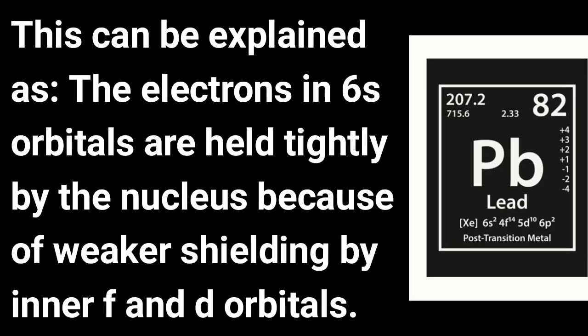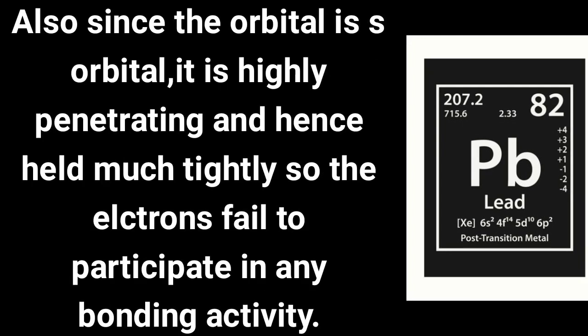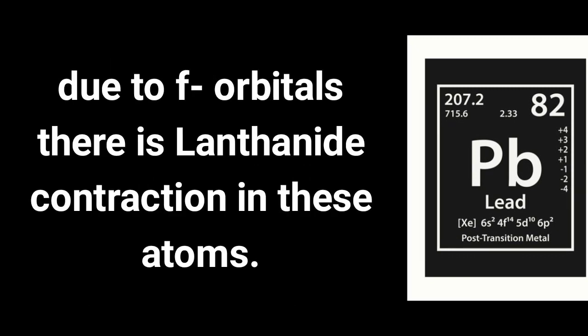This can be explained as follows: the electrons in 6s orbitals are held tightly by the nucleus because of weaker shielding by inner f and d orbitals. Also, since the orbital is an s orbital, it is highly penetrating and hence held much more tightly, so the electrons fail to participate in any bonding activity.